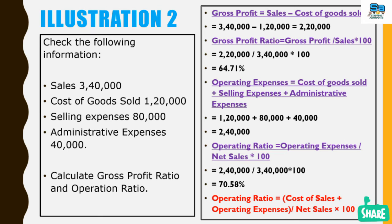Now we apply gross profit ratio formula: gross profit divided by sales, multiplied by 100. The gross profit value is 2,20,000 divided by 3,40,000 (net sales, already given in the problem), multiplied by 100, equals 64.71%. Now we have to calculate operating expense in order to get the operating ratio.